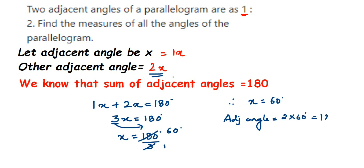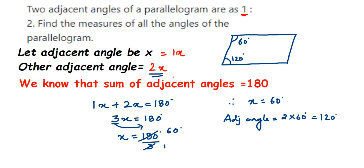Let me draw the parallelogram again. We have found two angles, but we need all four. Suppose one angle is 60 degrees and its adjacent angle is 120 degrees. Label the parallelogram A, B, C, D. In a parallelogram, opposite angles are equal. So angle B (opposite to D at 120°) is also 120 degrees, and angle C (opposite to A at 60°) is also 60 degrees.